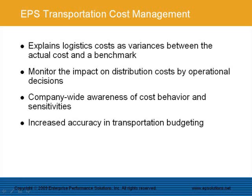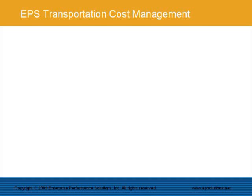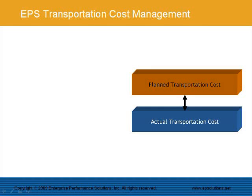A continuous variance analysis cycle results in improvements to the detail and accuracy of distribution budgets and sets more realistic expectations of future transportation expenses. The analysis of unfavorable transportation cost variances will uncover areas for cost savings that will fuel a continuous transportation cost savings campaign. Structurally, the module consists of two main components.